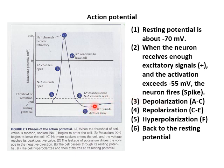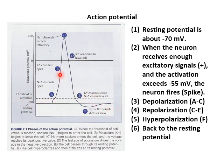Before the membrane potential goes back to the resting potential, it becomes more negative than the resting potential — that's called hyperpolarization. Then the membrane potential returns to the resting potential of negative 70 millivolts. This is one spike, one action potential.